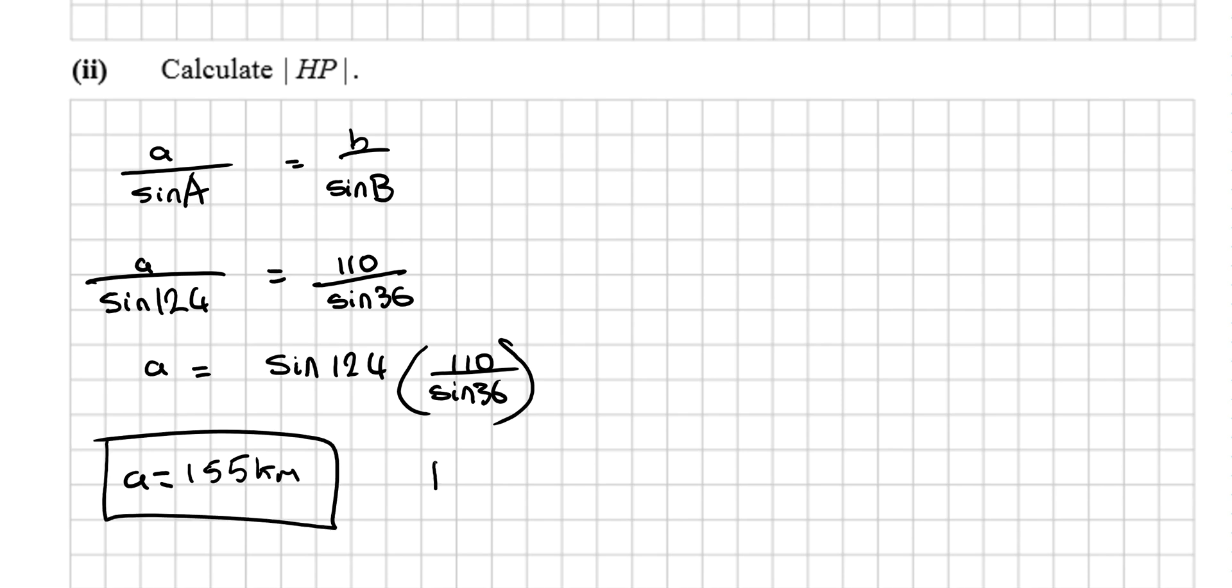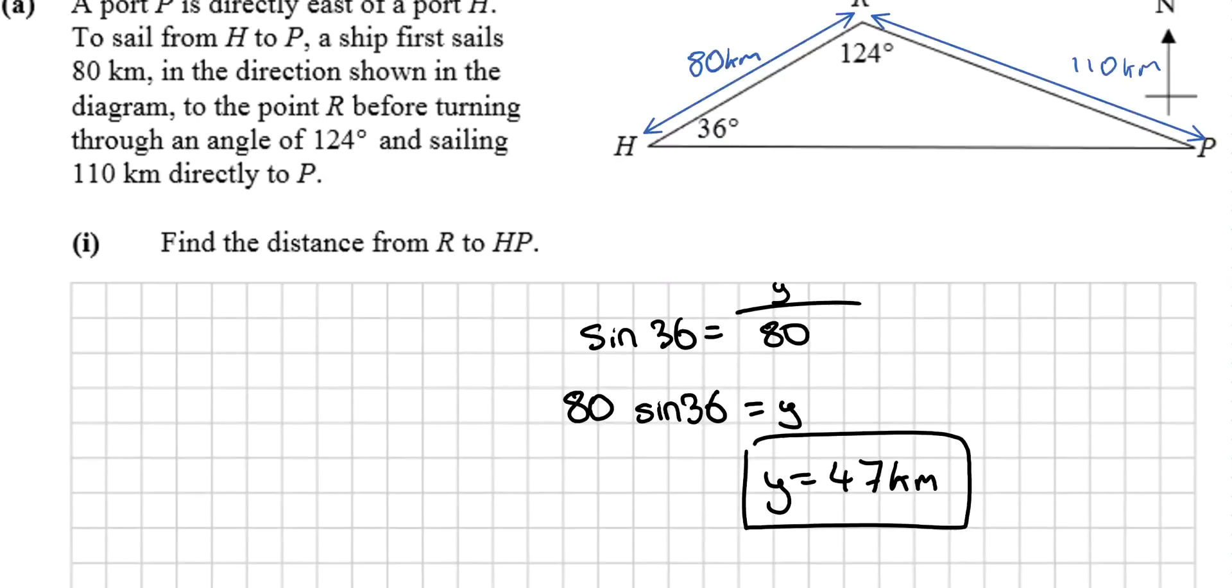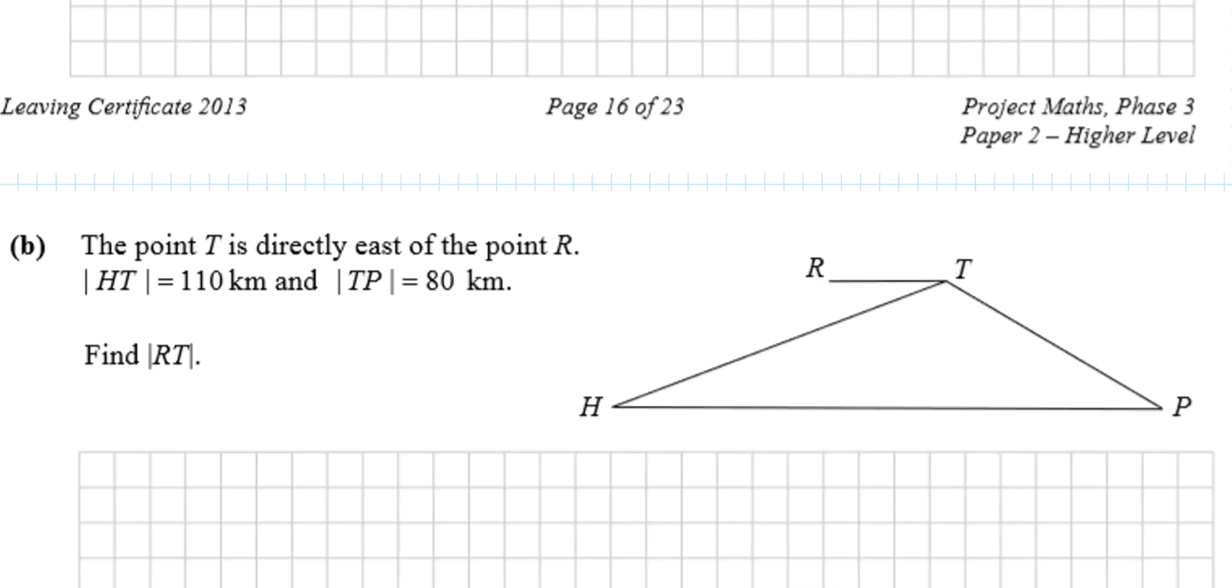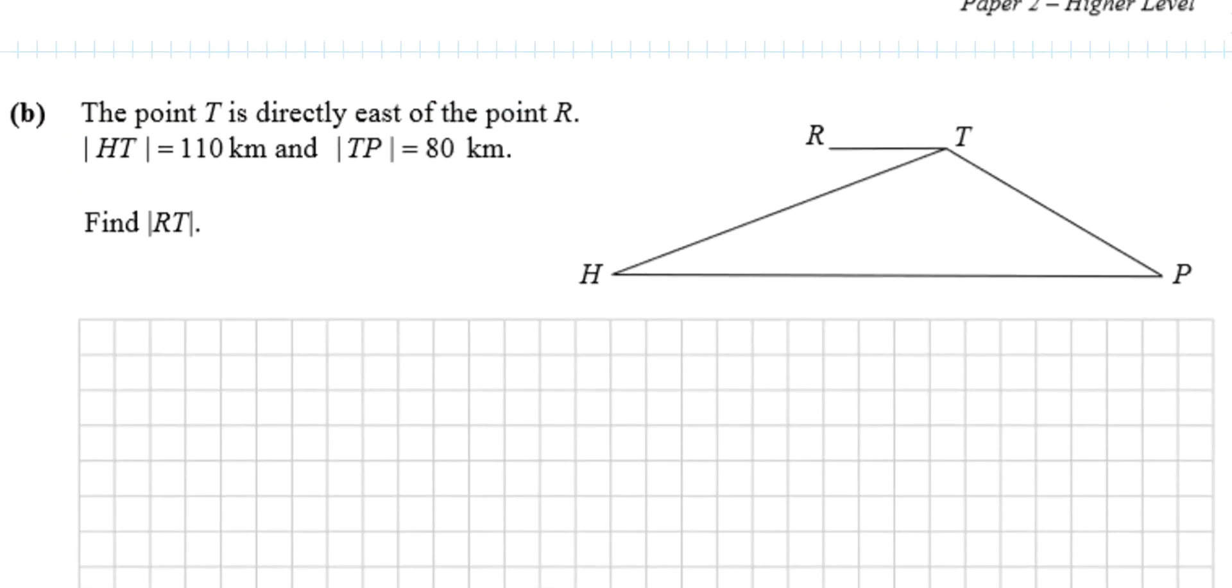Finally, the last question: Point T is directly east of point H. HT is 110 kilometers and TP is 80 kilometers. Find RT. First, we need to superimpose the information we already know.